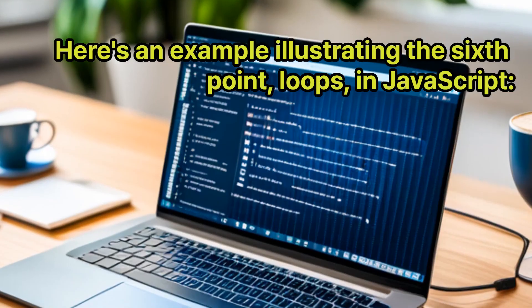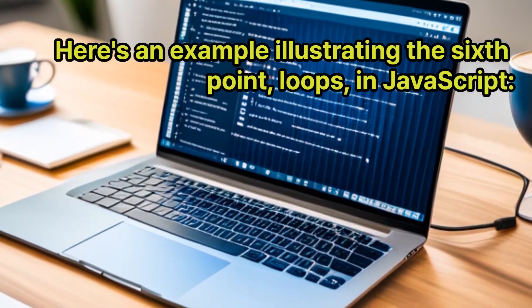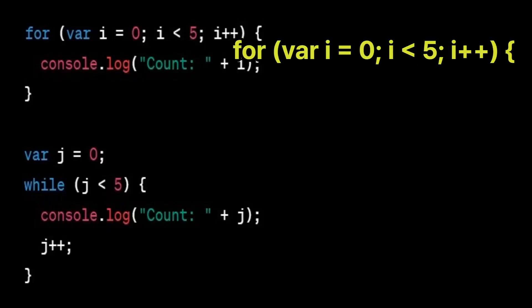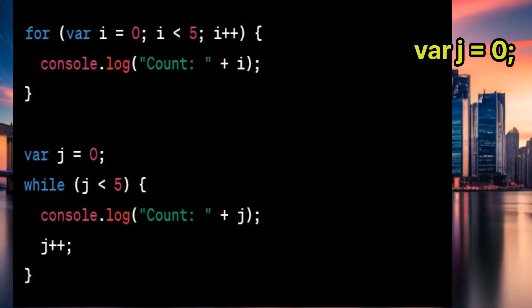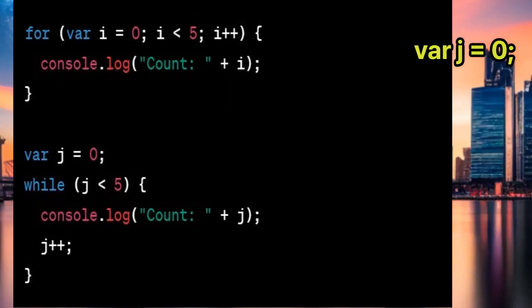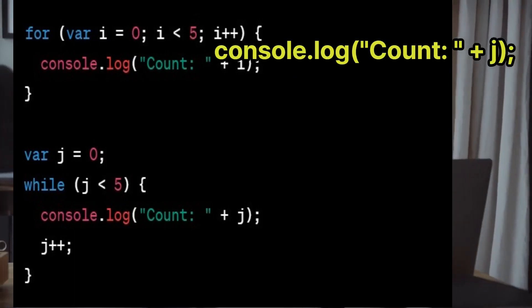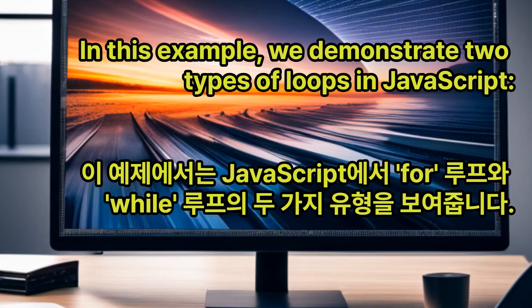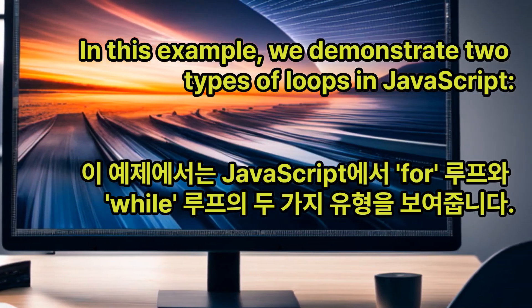Here's an example illustrating the sixth point, loops, in JavaScript: for (var i = 0; i < 5; i++) { console.log('count', i); } var j = 0; while (j < 5) { console.log('count', j); j++; }. In this example, we demonstrate two types of loops in JavaScript: the for loop and the while loop.